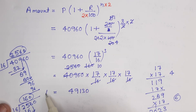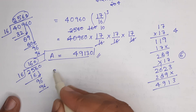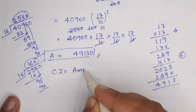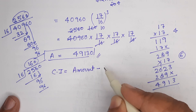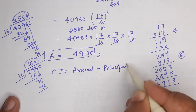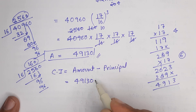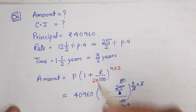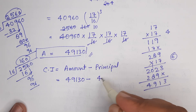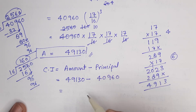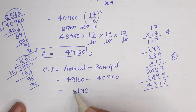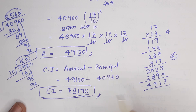तो amount निकल कर आया — amount = 49,130। और क्या पूछा था? Interest कितना है? Compound interest = Amount − Principal = 49,130 − 40,960 = 8,170 रुपीज। आपको समझ में आया होगा, चलते हैं next question पर।